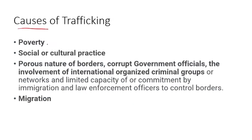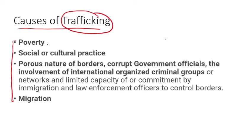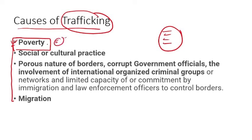Some causes of trafficking that you should think about conceptually: Poverty is a major reason — people agree to go with strangers for job opportunities because they want to escape their situation and get a life with self-respect. They don't know they are falling into a trap. Lack of education also plays a role, as an unaware, illiterate person cannot cross-verify documents and is easily trapped by false promises.